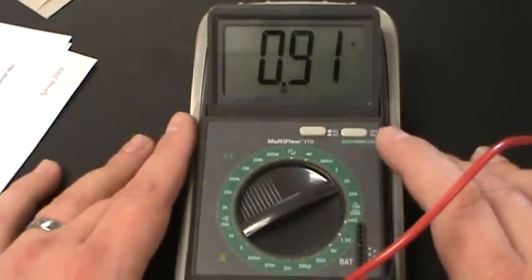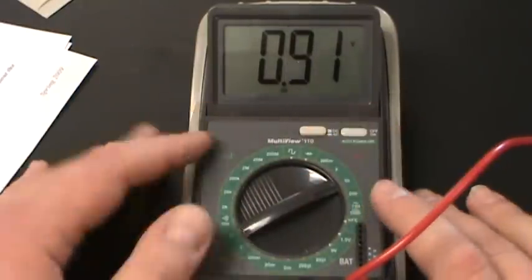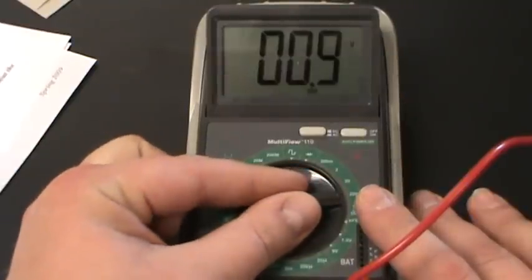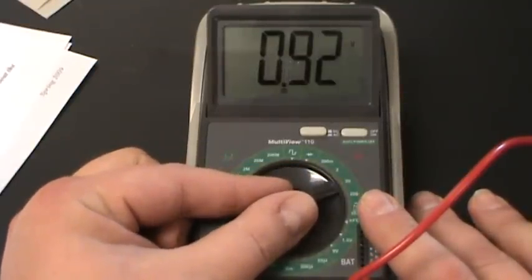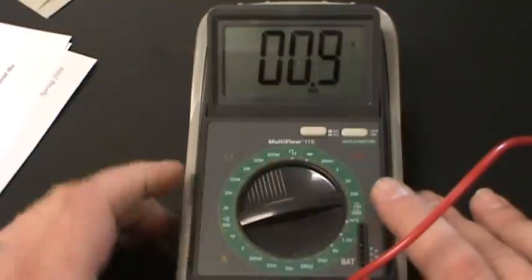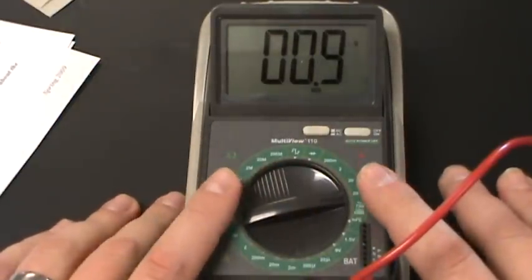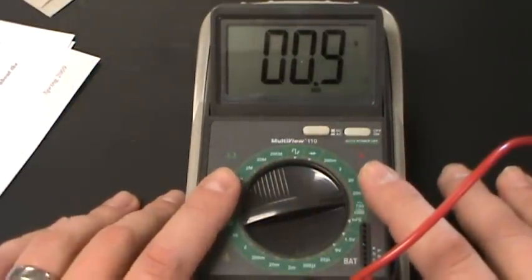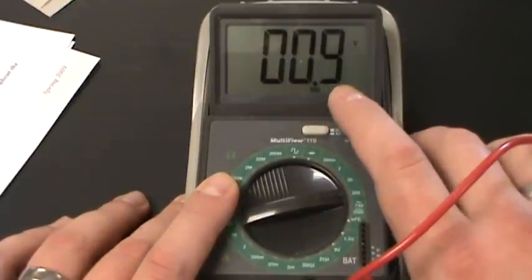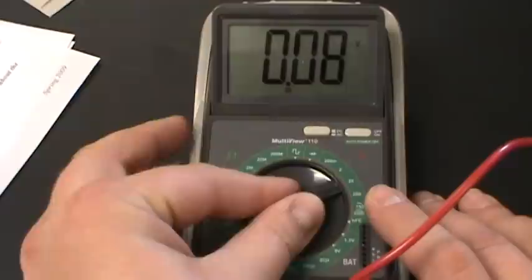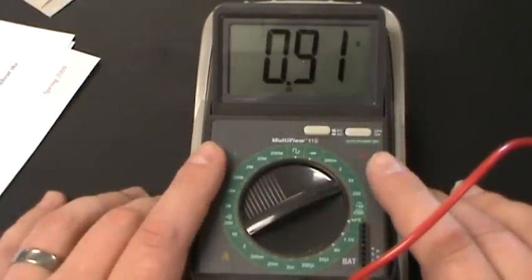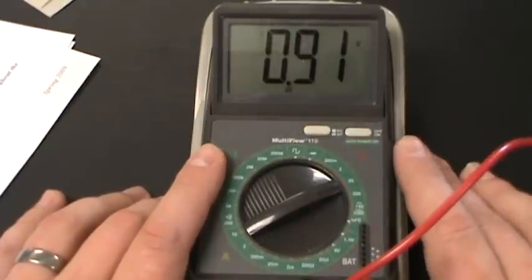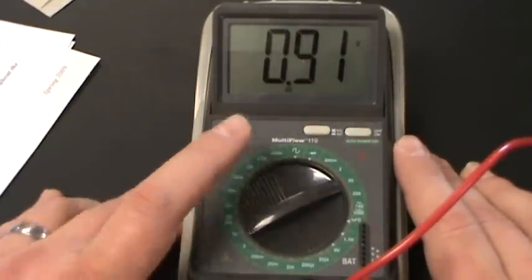Well, let's try flipping it to 20 and see. What did you notice that? Watch the decimal point. When you switch from 200 to 20, all it does is move the decimal point. So in the 200 setting, this meter can measure up to 200 volts but it only gives you one decimal place of information. If I switch this to 20, well now this will only measure up to 20 volts but it'll give me two decimal places of information.